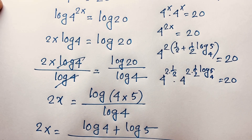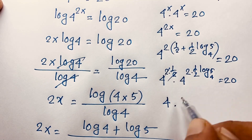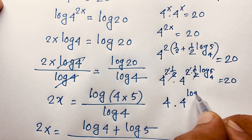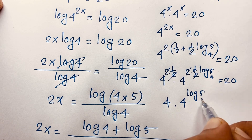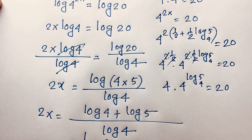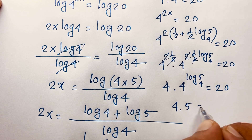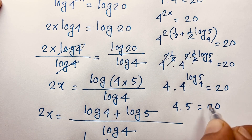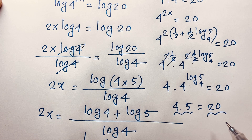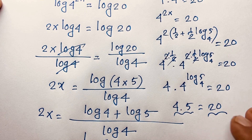Equivalently, the 2 and 1 over 2 cancel to give 4, and the other pair cancels to give 4 to the power log 5 base 4, which equals 5. So we get 4 times 5 is equal to 20. The left-hand side and right-hand side are equal.